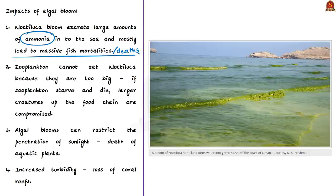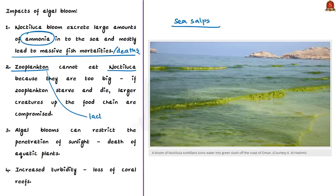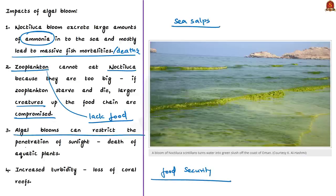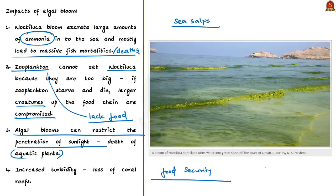Zooplankton that can eat diatoms cannot eat Noctiluca because it is too big. Only jellyfish, sea salps, and turtles can feed on Noctiluca. So if zooplankton starve and die, larger creatures in the food chain are also compromised, severely affecting fishing industries. Algal blooms can also restrict the penetration of sunlight, resulting in the death of aquatic plants, restricting replenishment of oxygen. Primary consumers like small fishes are killed due to oxygen deprivation, adversely affecting the food chain and leading to destruction of higher life forms.